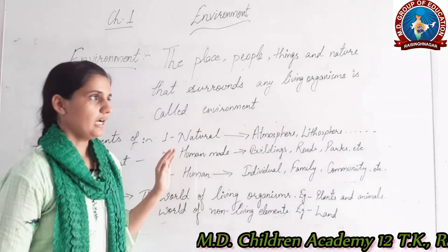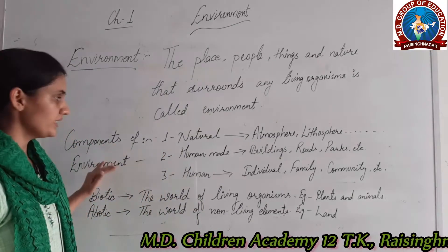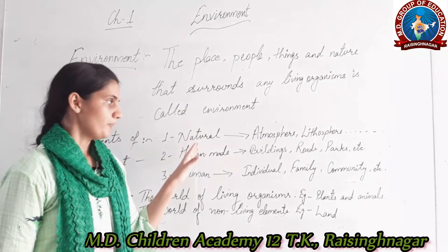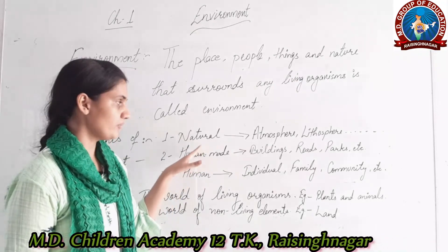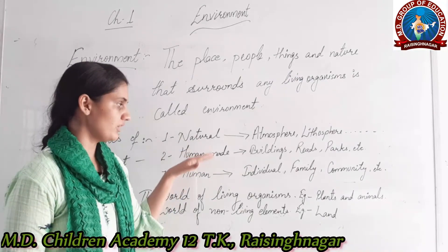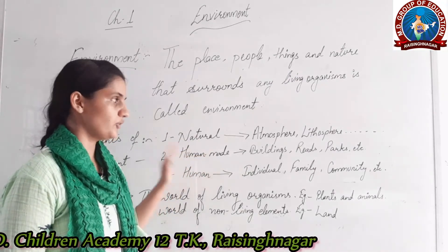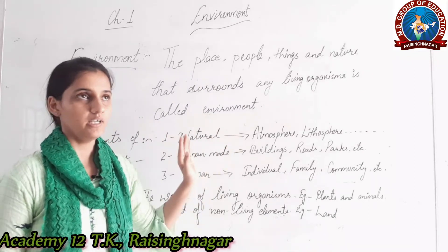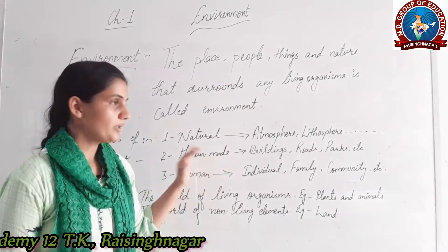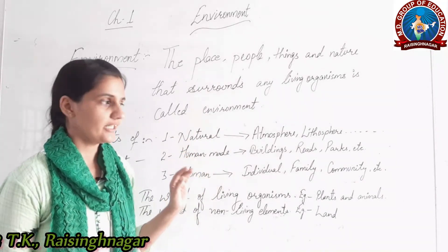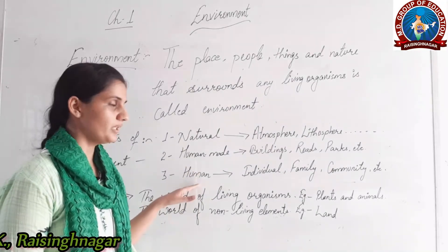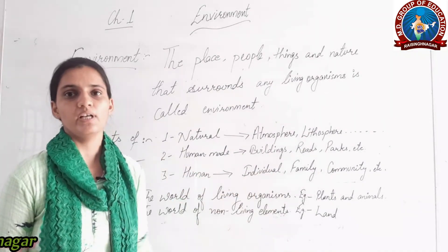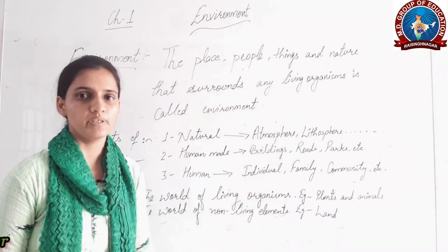To summarize, the components of environment: mainly there are three — natural, human-made, and human. Natural environment is that which naturally occurs; human-made refers to things created by humans; and human environment includes all things such as family that are related to humans.